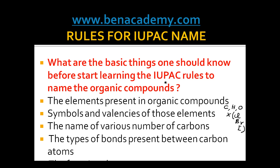The second thing we should know is the symbols and valences. C is carbon, H is hydrogen, O is oxygen, and X is a general symbol for all the halogens — chlorine (Cl), bromine (Br), iodine (I). The valency of carbon is 4, the valency of hydrogen is 1, the valency of oxygen is 2, and the valency of all the halogens is also 1.